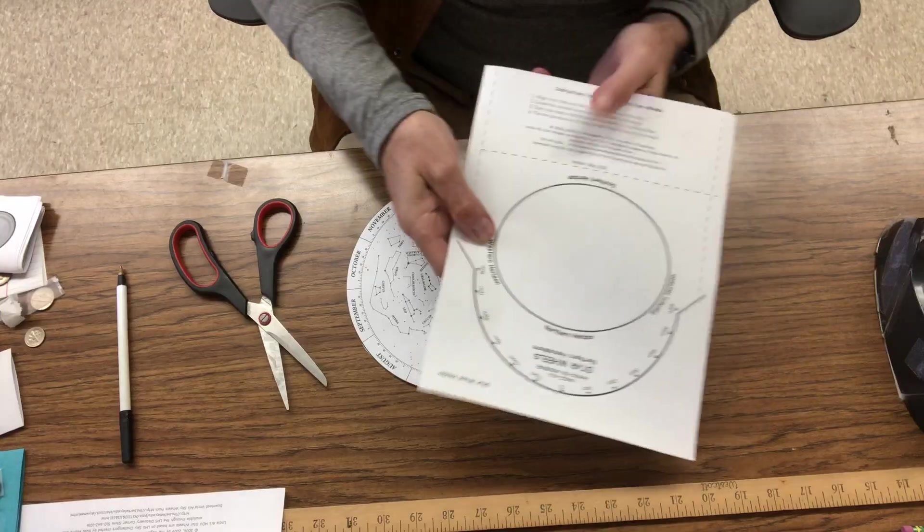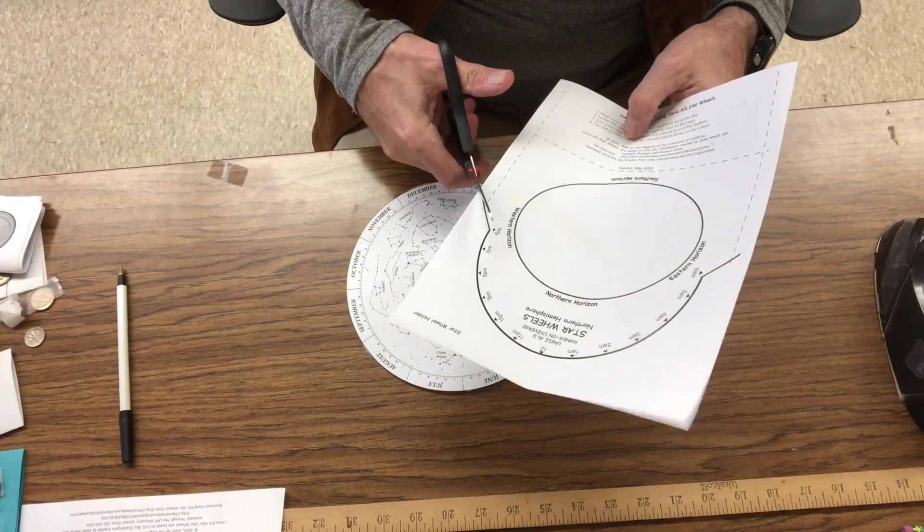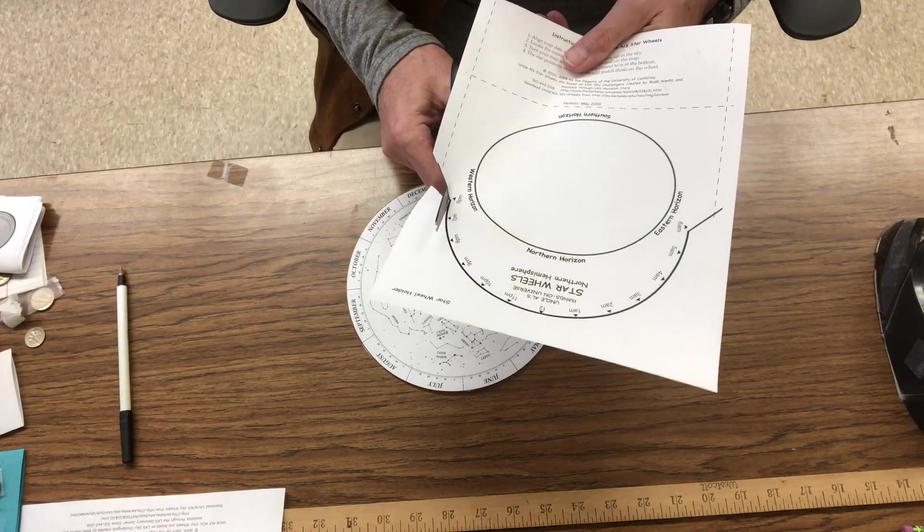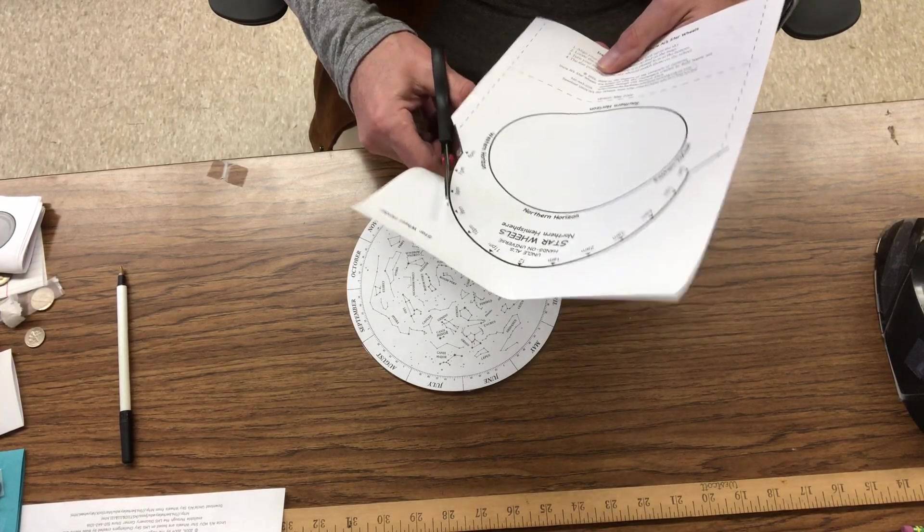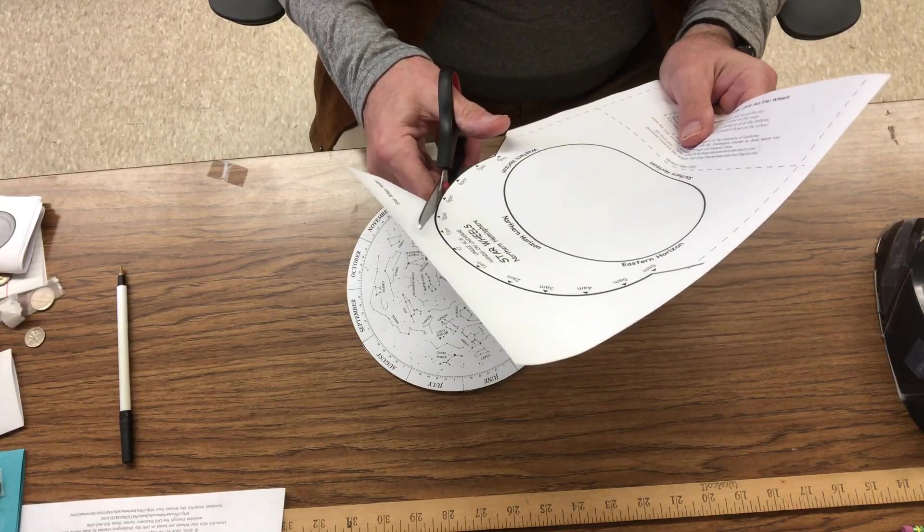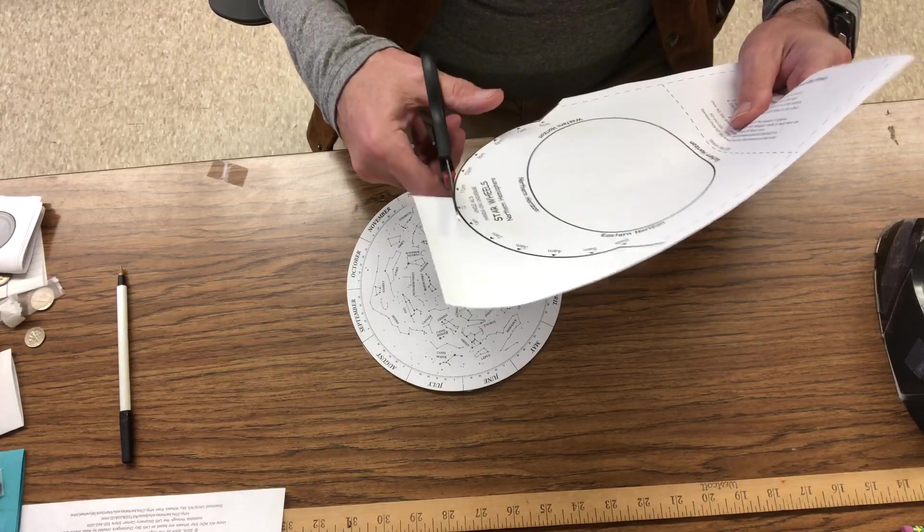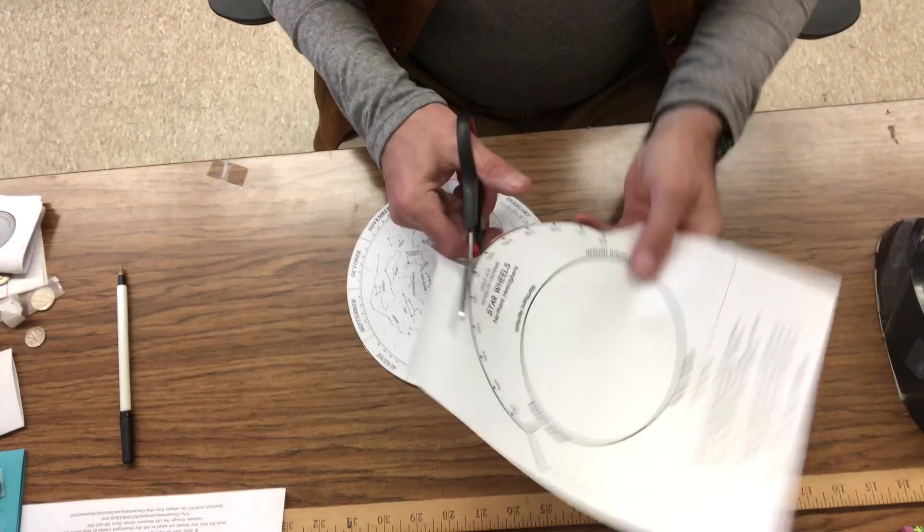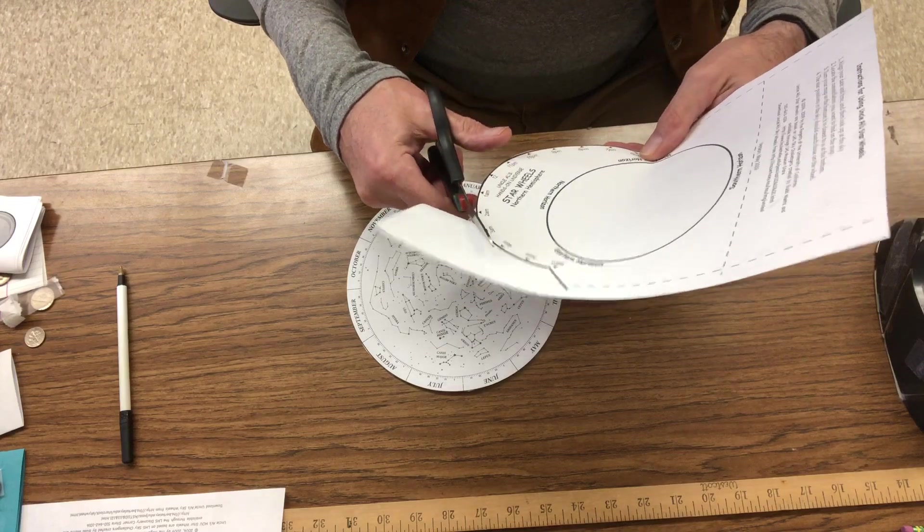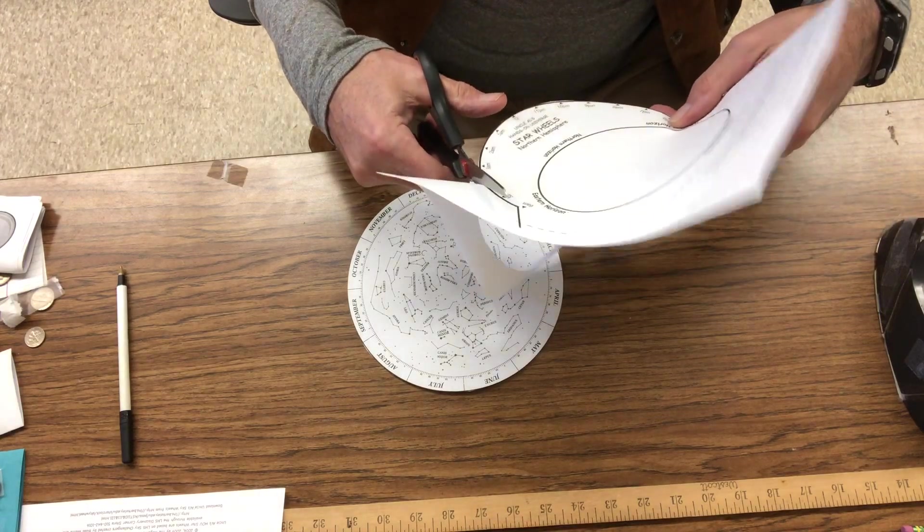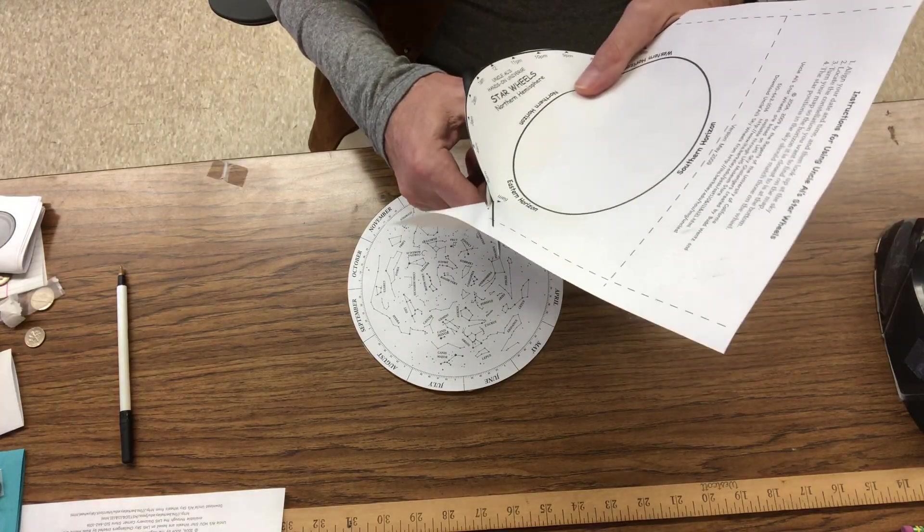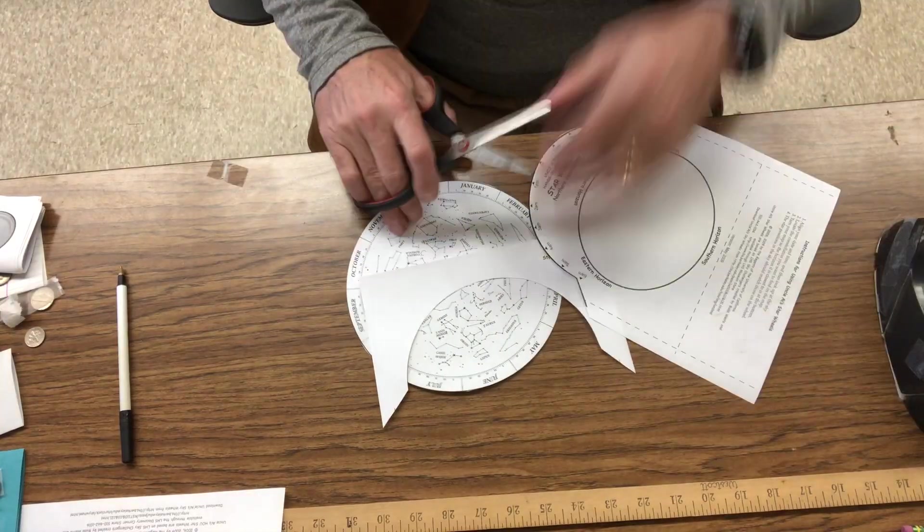Now this part, we cut this line around the edge, half circle here, right all the way around going past the hours. Those hours are the hours that you're outside looking at stars. I'm going to keep going all the way around. Almost there. All right, and cut that off. All right, we're good there.